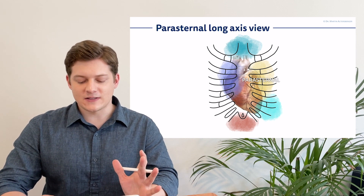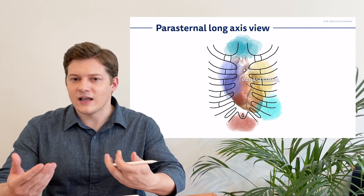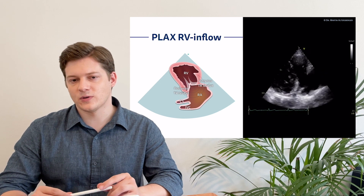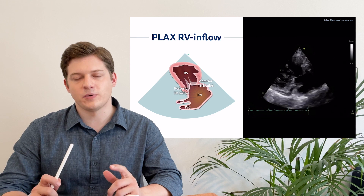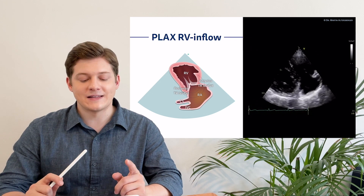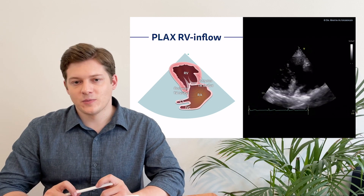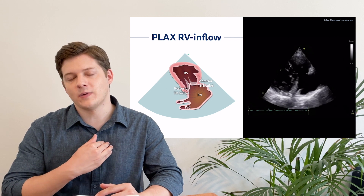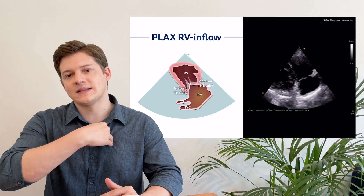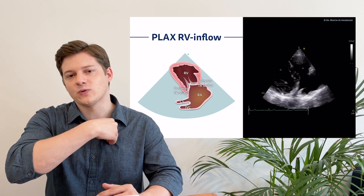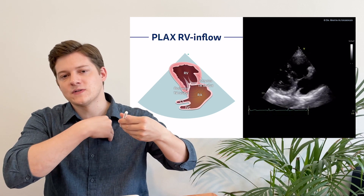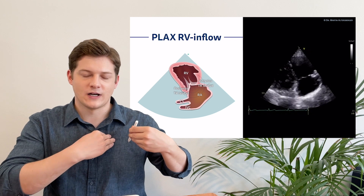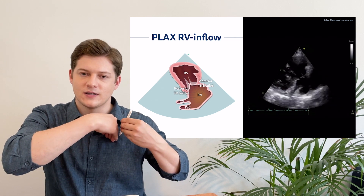There are atypical views we have to acknowledge. How do you acquire them? There are two views specifically we want to visualize. The first atypical view is the parasternal long axis view of the right ventricular inflow. You start in your parasternal long axis with the marker pointing to the right shoulder, and you simply tilt the transducer downwards — meaning the ultrasound beam is directed caudally, not upwards but downwards.